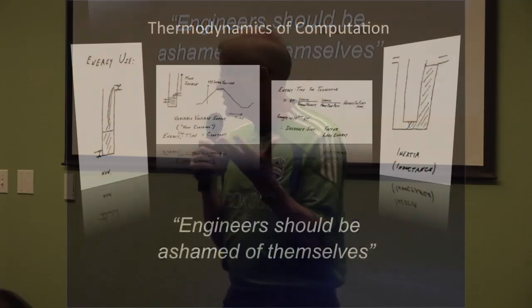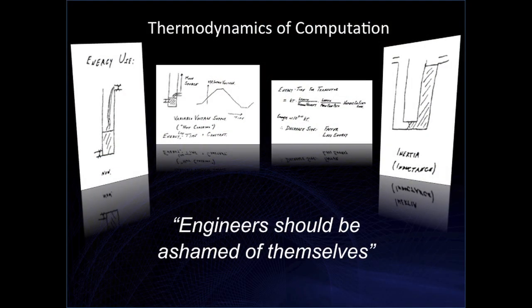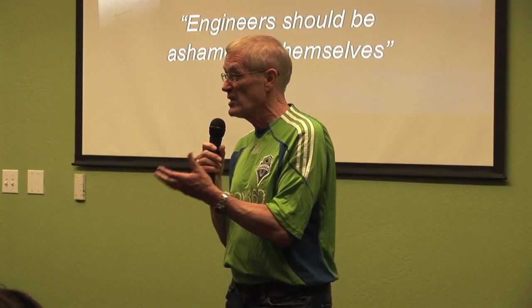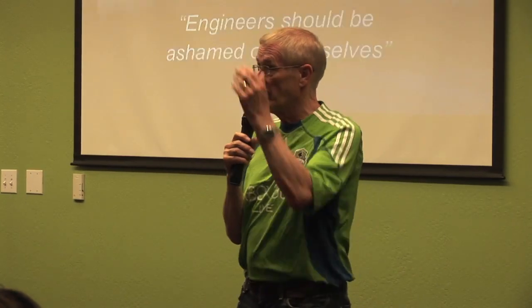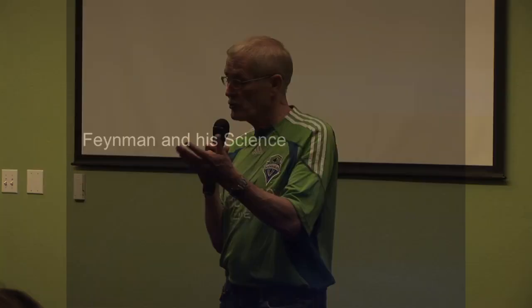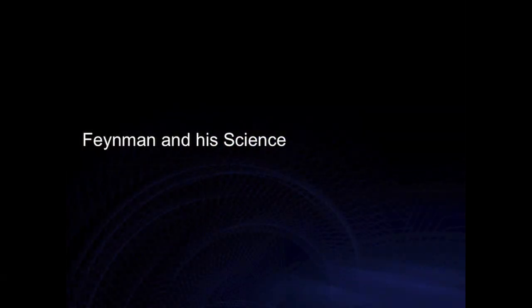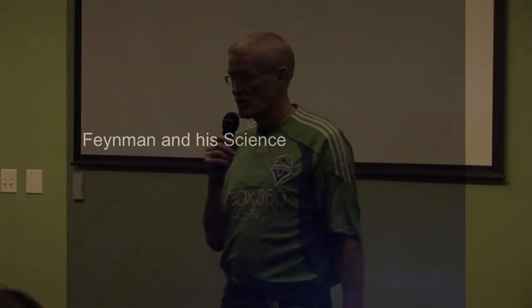He was also concerned about the energy loss in our chips — they use so much energy. From his thermodynamic calculations, he'd looked at the limits, and the switches in today's chips are ten billion times more inefficient than they need to be, so he felt engineers should be ashamed of themselves. In the future, I think when we get to nanosystems such as Stan Williams' Memristor, you'll see very much lower energy.